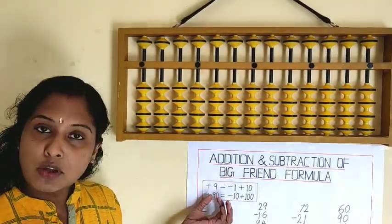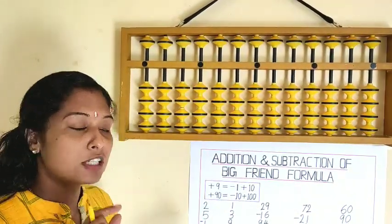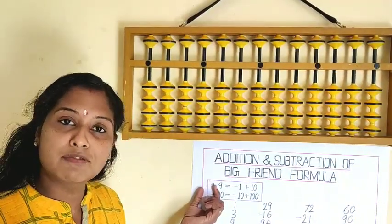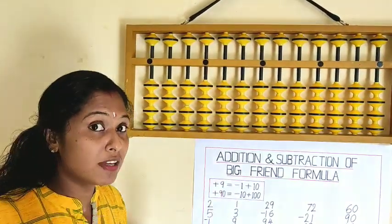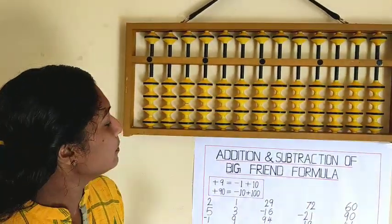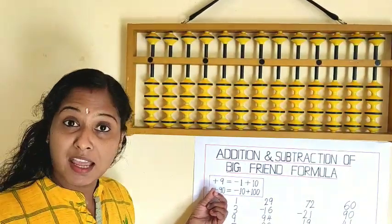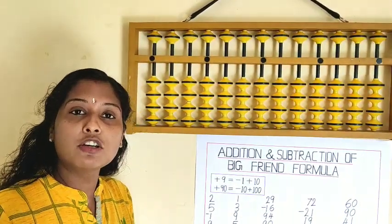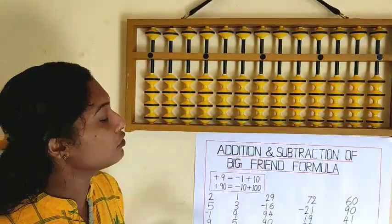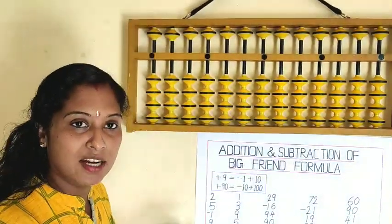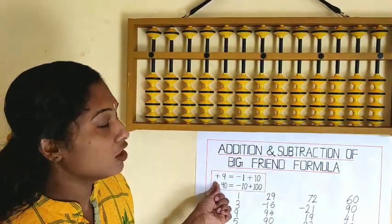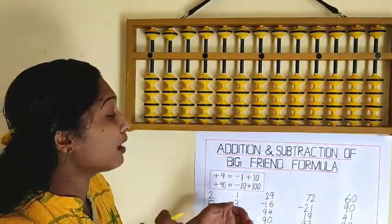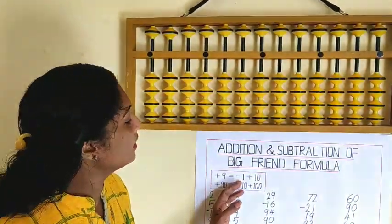Today we are going to discuss about only one formula, that is plus 9. You know big friend formula always starts with minus simple. So 1 plus 9 equals 10. We can say the big friend of 1 is 9 and big friend of 9 is 1. So for plus 9 — if you want to add 9, what will we do? Minus 1 plus 10.